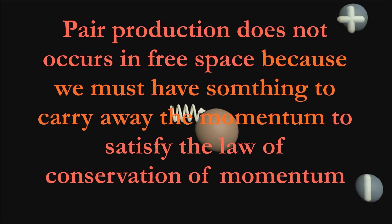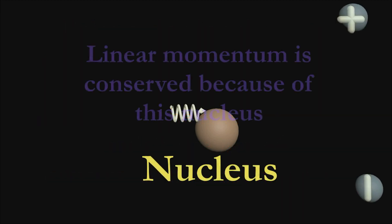Pair production does not occur in free space because we must have something to carry away the momentum to satisfy the law of conservation of momentum. Linear momentum is conserved with the help of the nucleus.